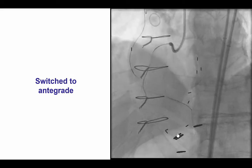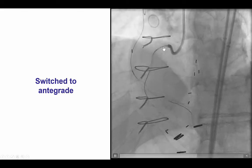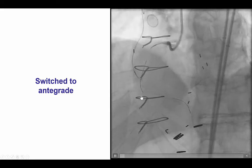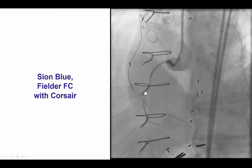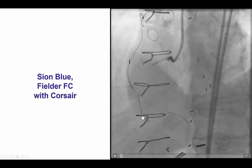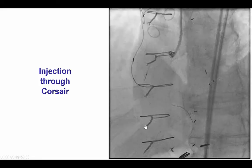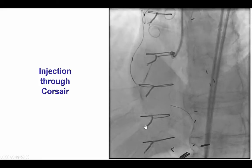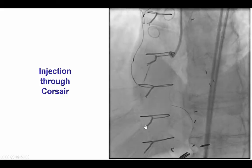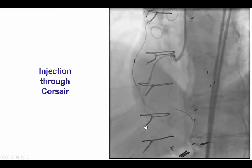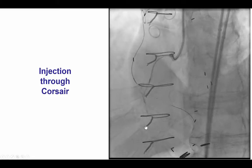As a result, we decided to try an antegrade crossing attempt. We advanced a second Corsair antegrade and then tried to localize the proximal cap by doing various injections. The wire of course wants to go preferentially into the large acute marginal branch. We did some localized injections through the Corsair trying to better understand the anatomy, but it was still hard to separate the origin of the occlusion from the takeoff of the marginal branch.